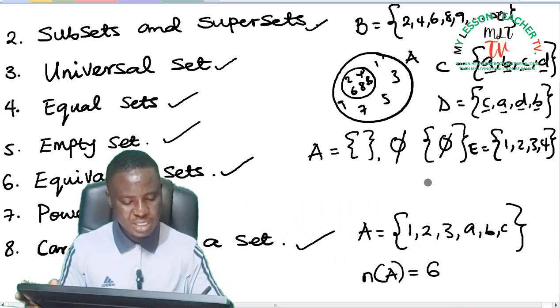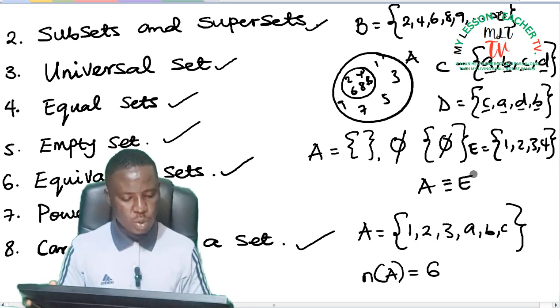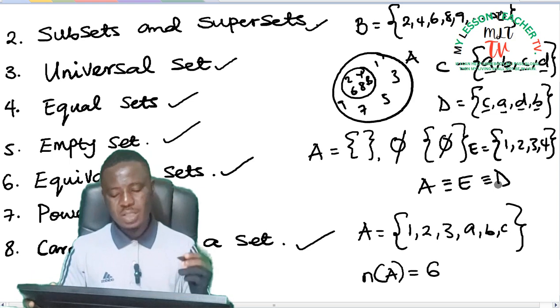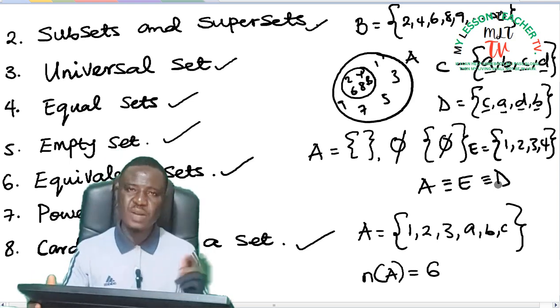And we can represent them as A is equivalent to E, and E is equally equivalent to D. So this is how we represent equivalent sets.